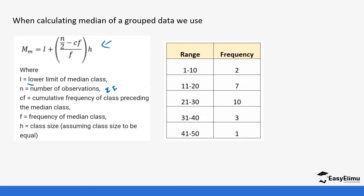Let's take an example and apply the formula. First we get the total frequency, which forms the value of n, because it helps us identify the median class. So it's 2 + 7 + 10 + 3 + 1, which gives us 23. The total frequency is 23.